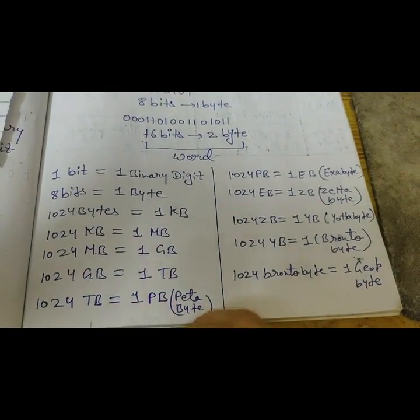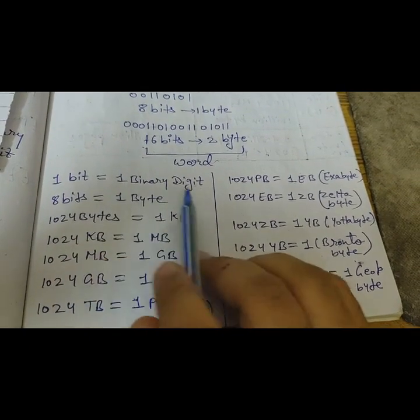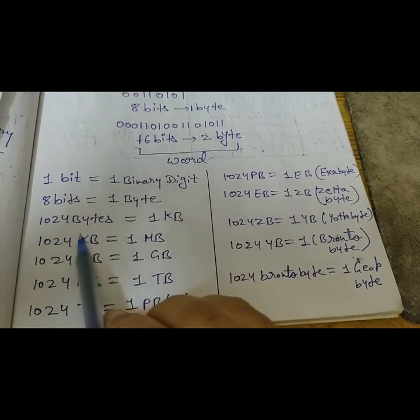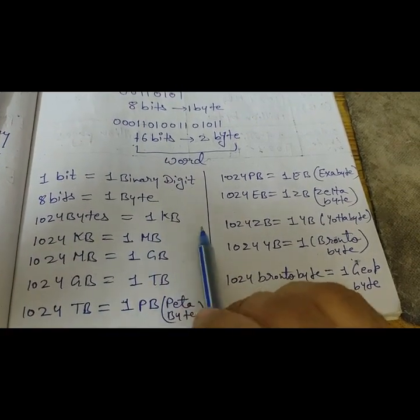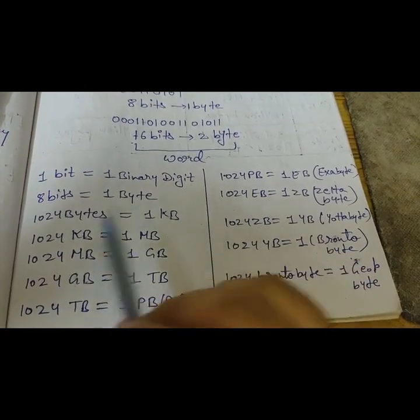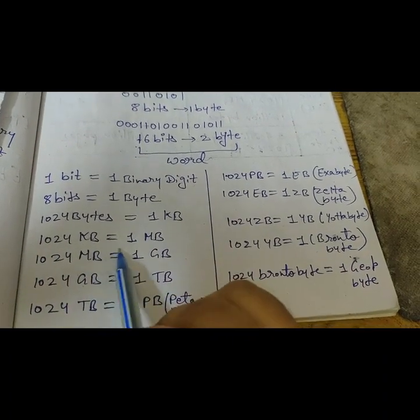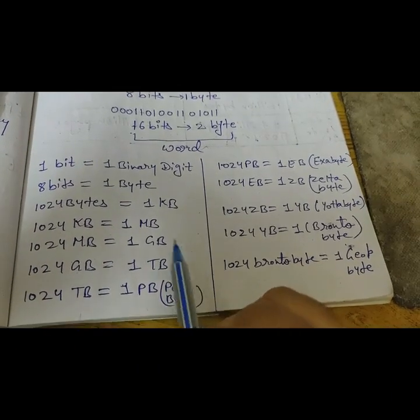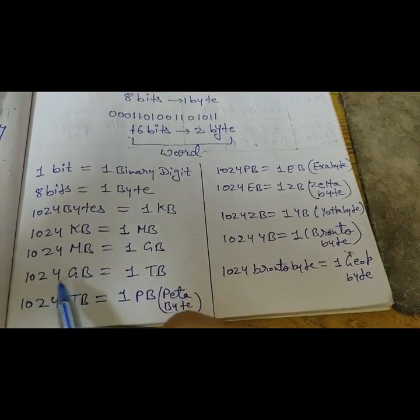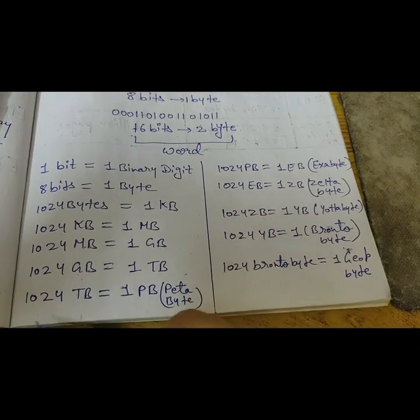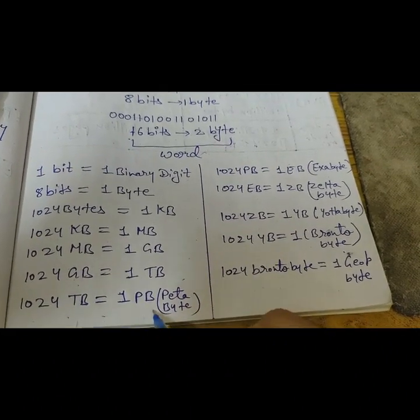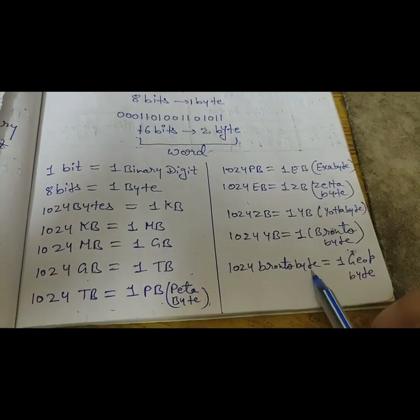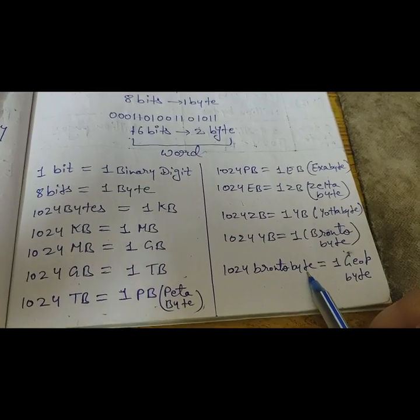This is a chart of measurement. One byte is equal to 1 binary digit. 8 bits is equal to 1 byte. 1024 bytes is equal to 1 KB means kilobyte. And 1024 kilobyte is equal to 1 megabyte. And 1024 megabyte is equal to 1 gigabyte. And 1024 gigabyte is equal to 1 terabyte. And 1024 terabyte is equal to 1 petabyte. So these all are measurements of units of memory.